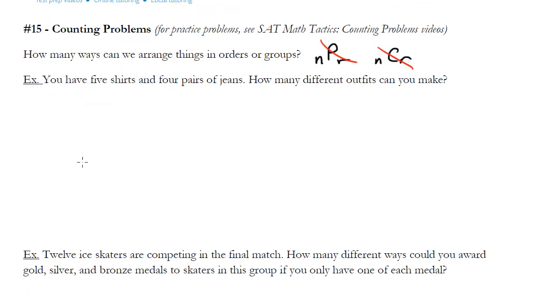You have five shirts and four pairs of jeans. How many different outfits can you make? So let's imagine, let's draw this out. I've got five shirts, so we'll say shirt A, B, C, D, and E. And then I've got four pairs of jeans, so we'll say jeans one, jeans two, jeans three, jeans four. How many different outfits can you make?